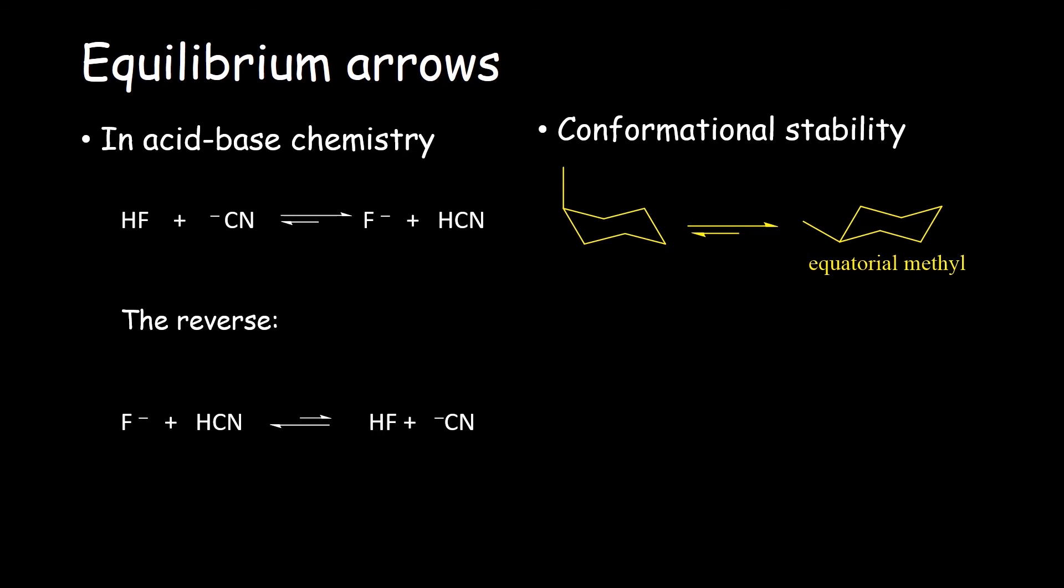Having the methyl group in the axial position increases the energy of the molecule due to steric interactions between the large methyl group and the hydrogens that are axial. This is called a 1-3-diaxial interaction. It's a steric interaction that destabilizes the molecule.